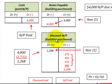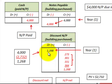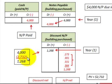Now this is a contra account. The debits and credits have opposite signs. So what we do here is we add the balance here to the discount to notes payable of $1,268. That was the $4,000 notes payable amount less its present value of $2,732, which equals $1,268.